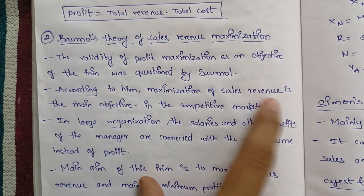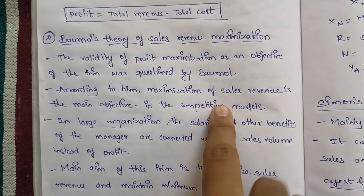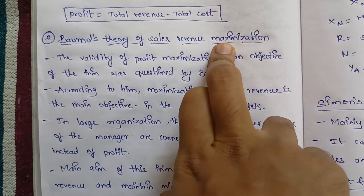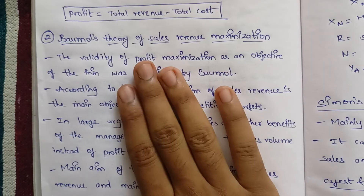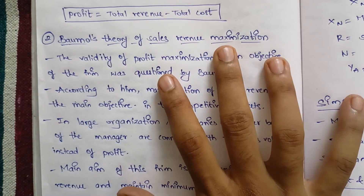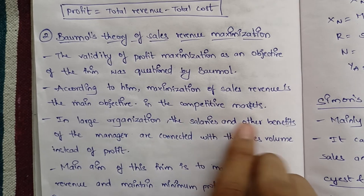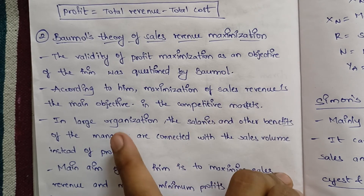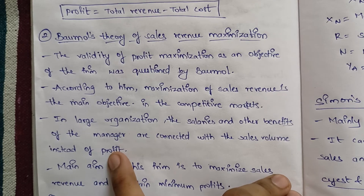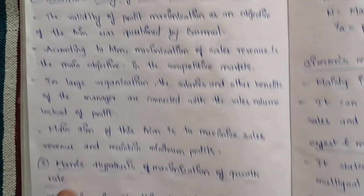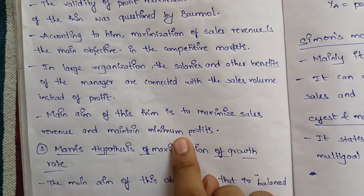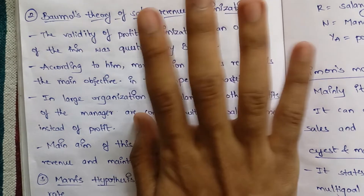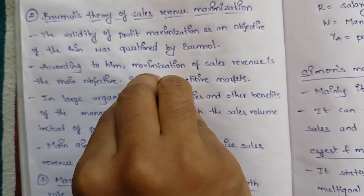According to Baumol, in the competitive market the main objective is maximization of sales revenue. In large organizations, the salary and other benefits of the manager are connected with sales instead of profit — the salary depends on sales rather than profit. The main aim is to maximize sales revenue and maintain a minimum profit.